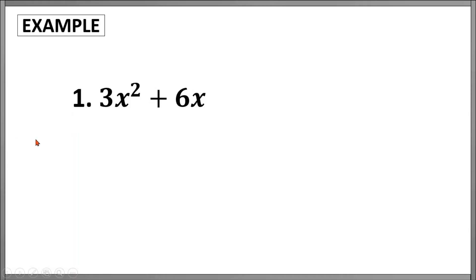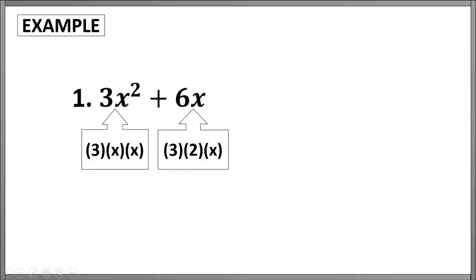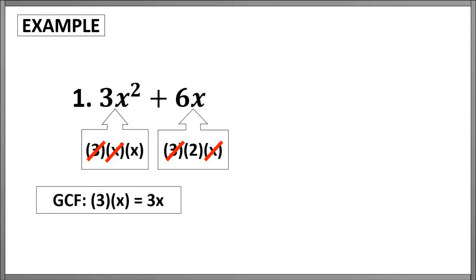Let's have some examples. For 3x squared plus 6x, the first step is to identify the GCF. To do that, let us express these terms as a product of primes: 3 times x times x for the first term, and 3 times 2 times x for our second term. If we multiply these factors we will surely go back to our original terms. Using this prime factorization, we can see clearly their common factors — we have 3 as their common factor, and another common factor is x.